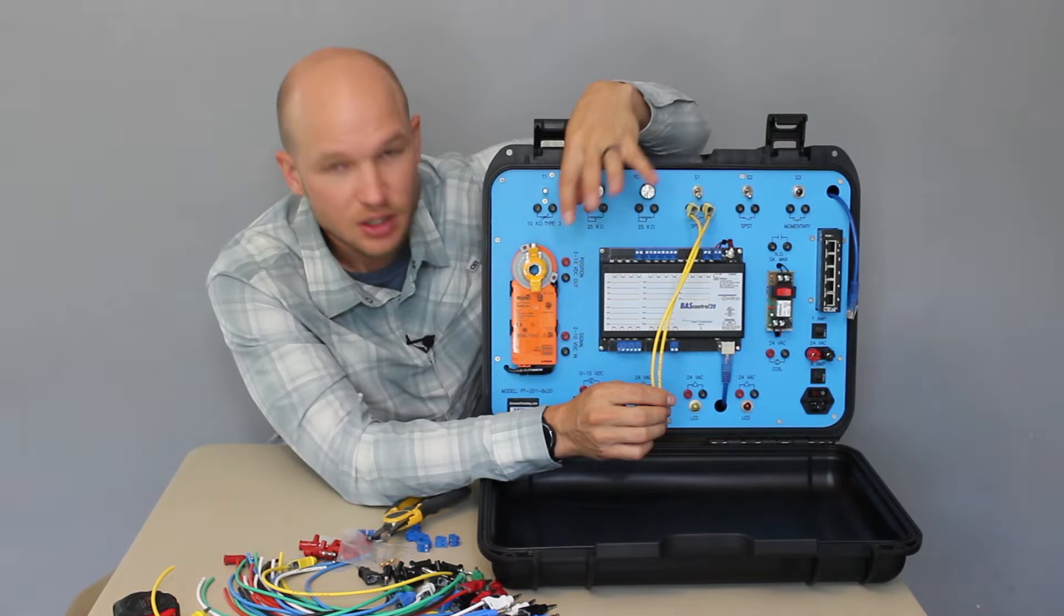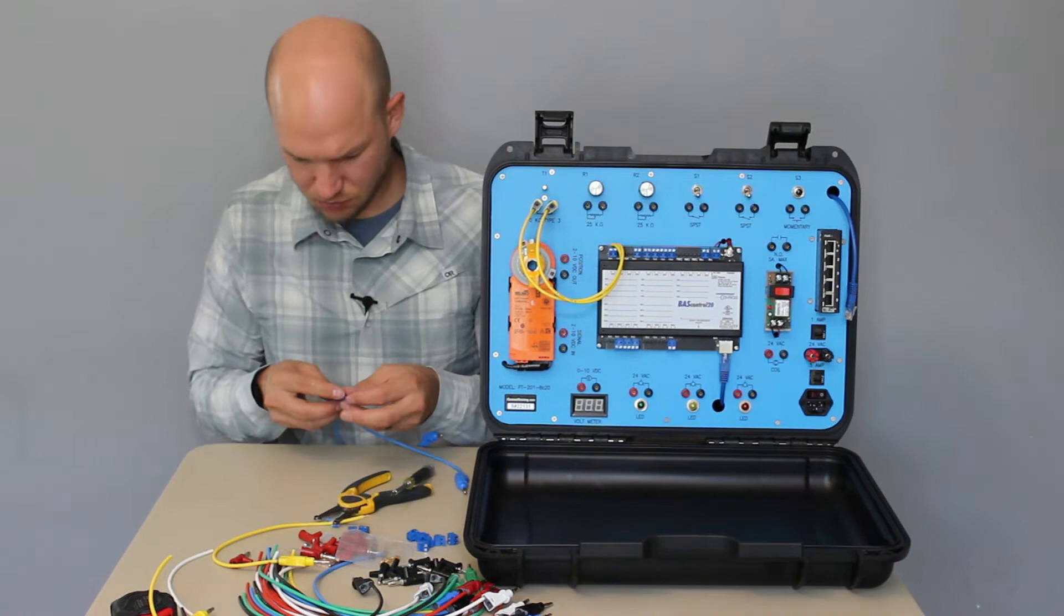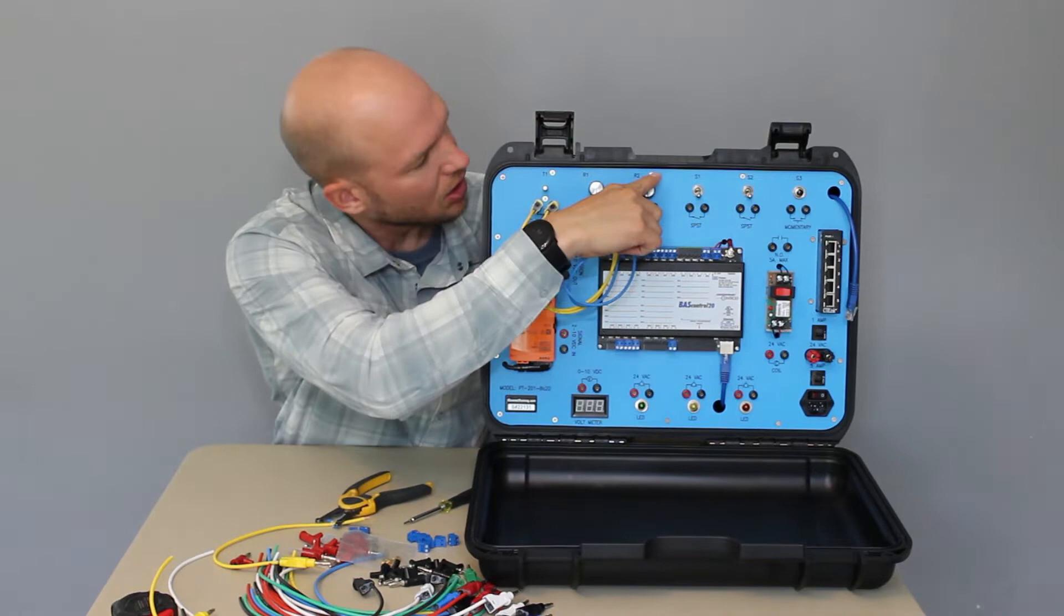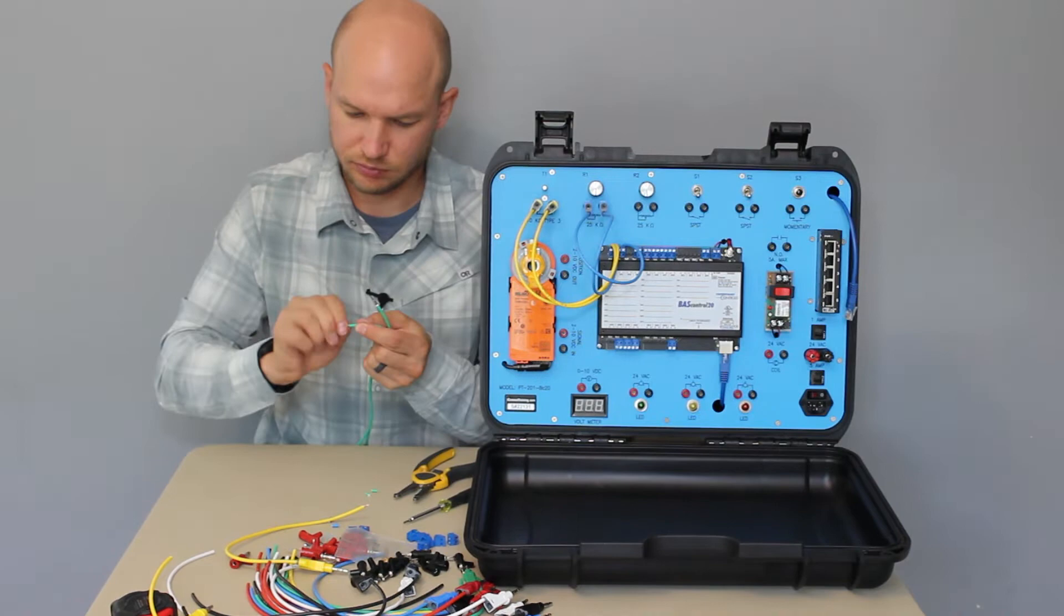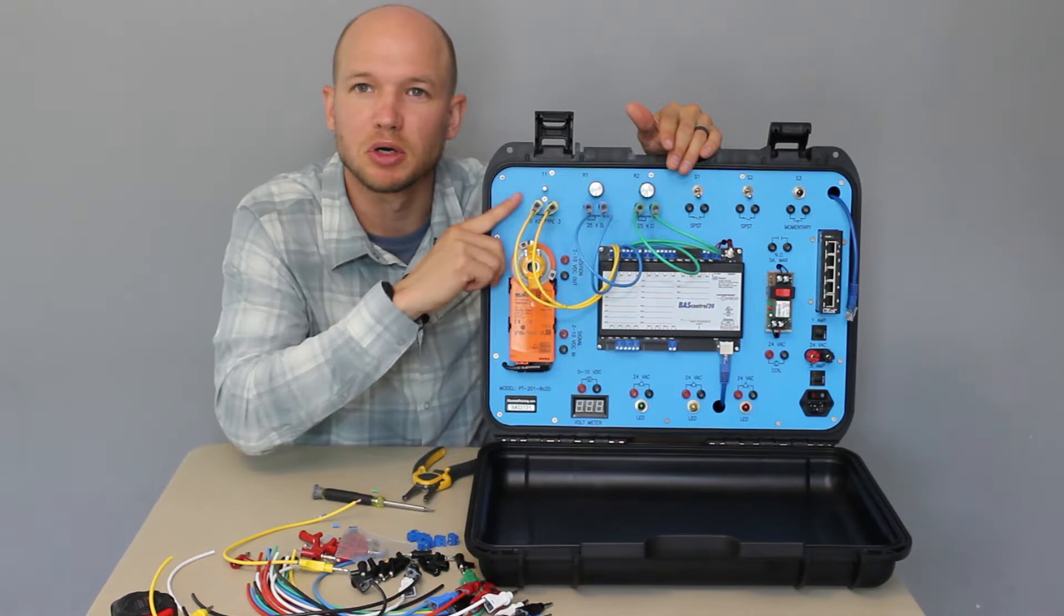So the 12 inch leads will get you anywhere on this unit to plug into the applicable spot on the controller. We can go ahead and connect R2 to universal input three. So you can see we're keeping the same color per input or output. And I think it looks a little neater that way.